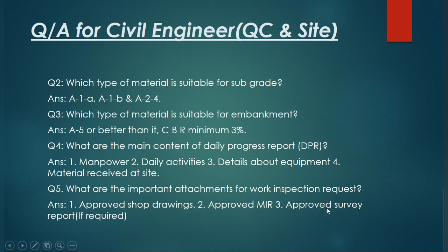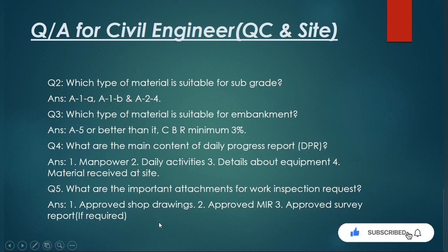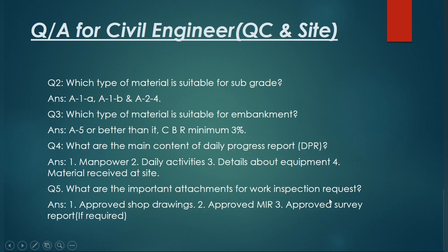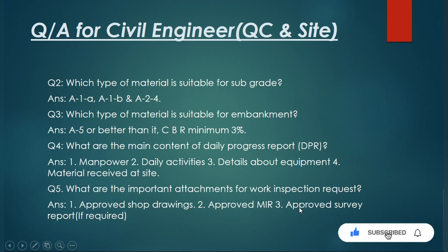The third attachment is an approved survey report, if required. For some activities, such as checking the location of steel reinforcement or floor levels, you need to attach the approved survey report. For example, if you are submitting a WIR for casting concrete, you need to attach the approved survey report.